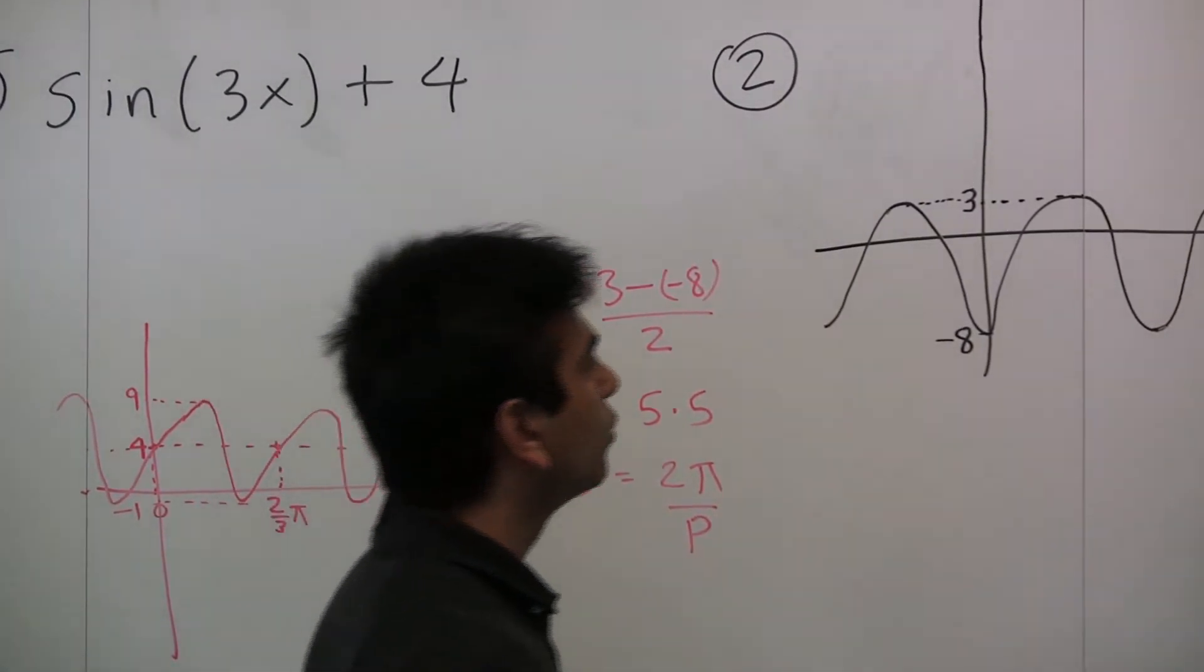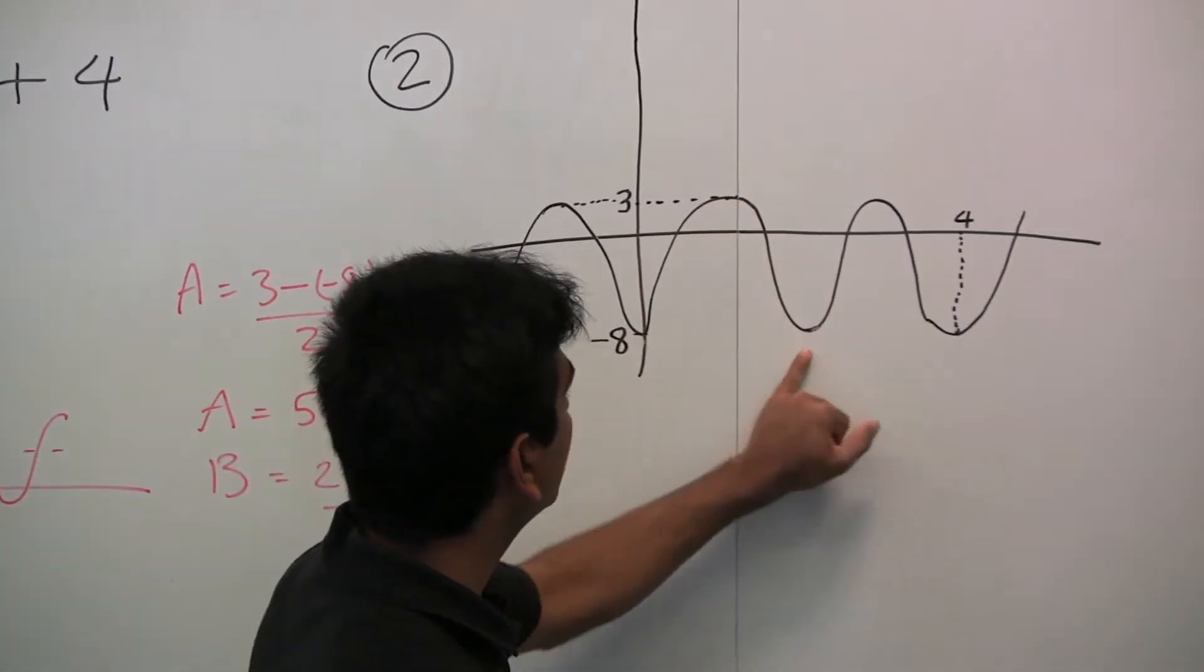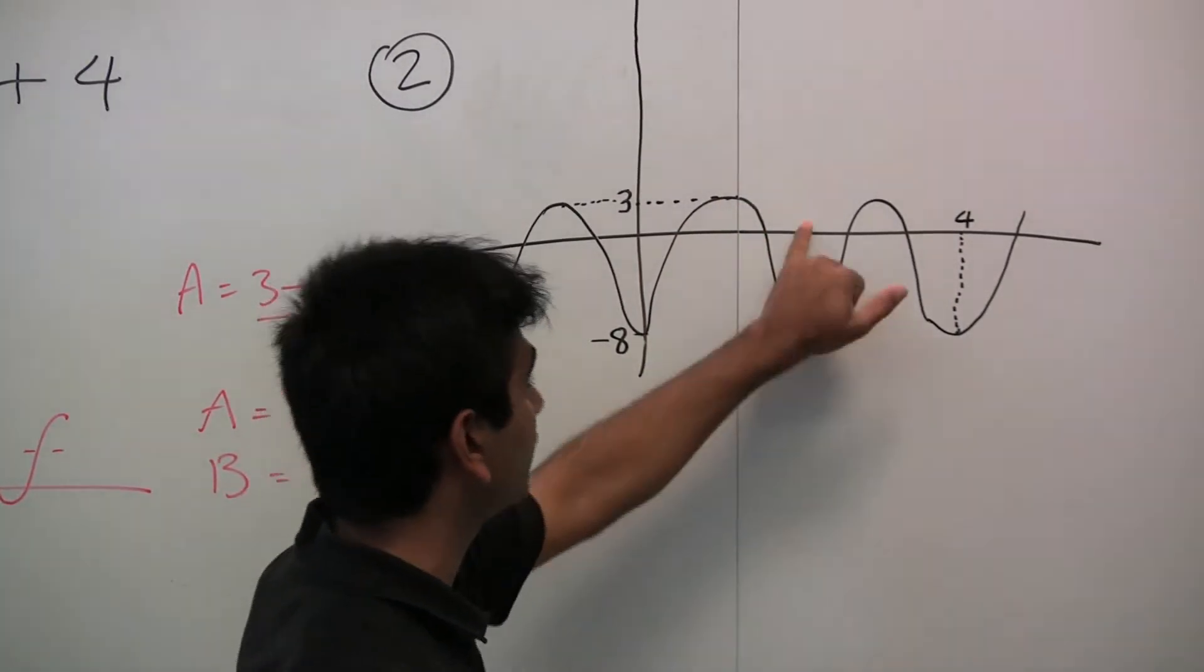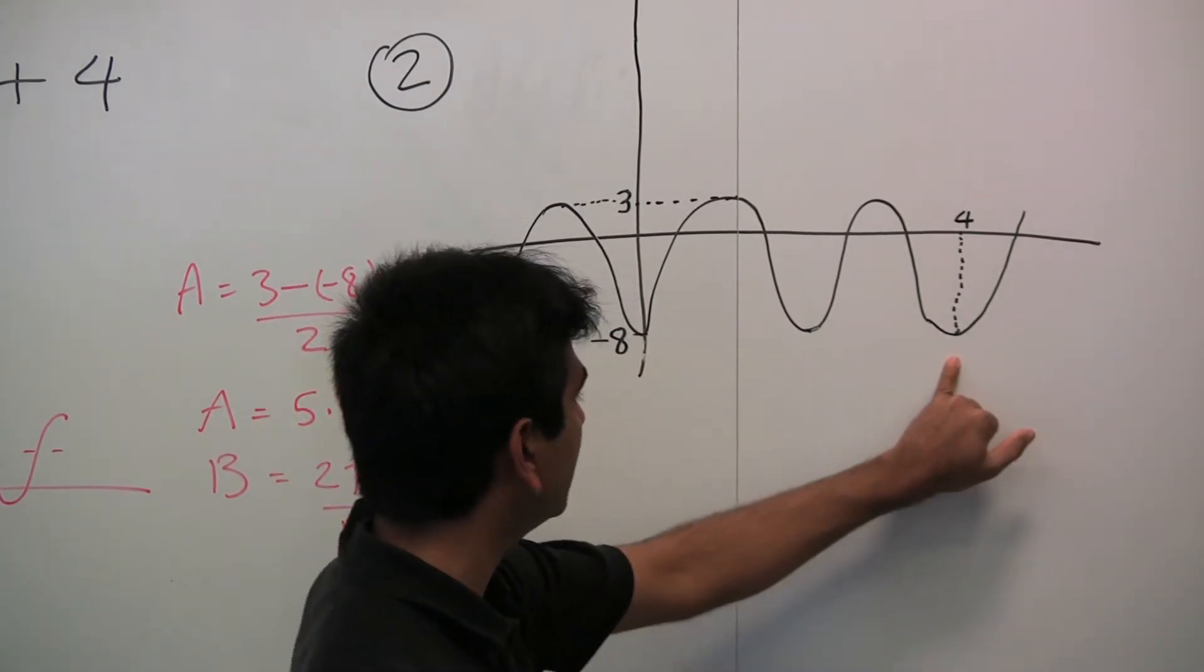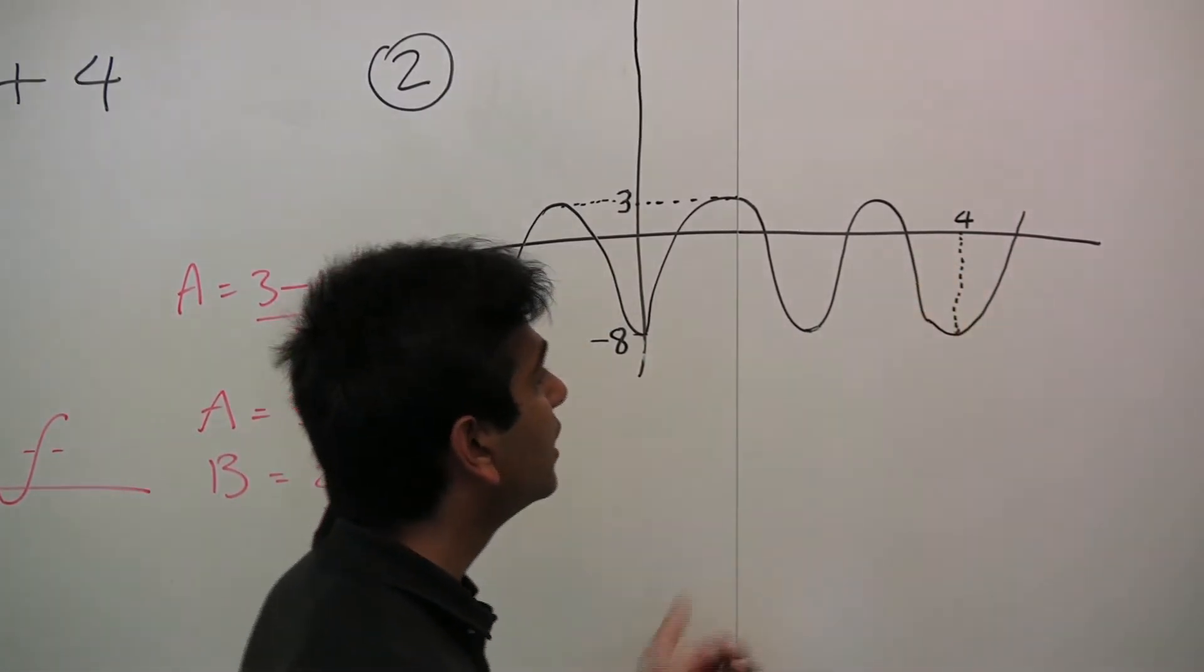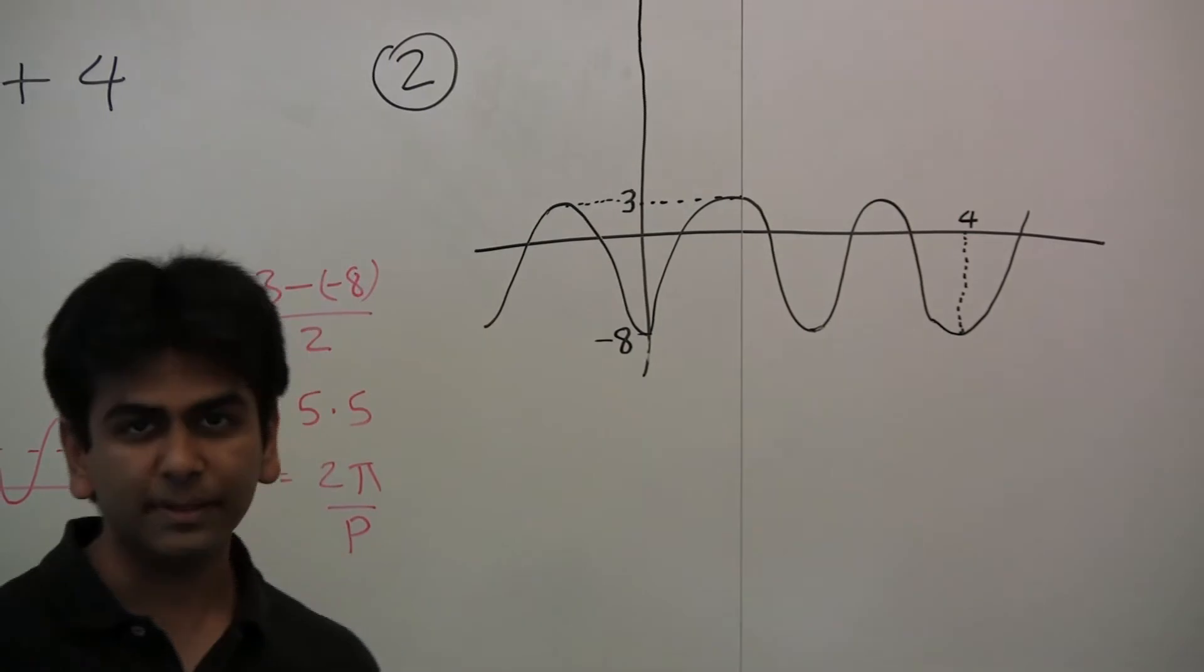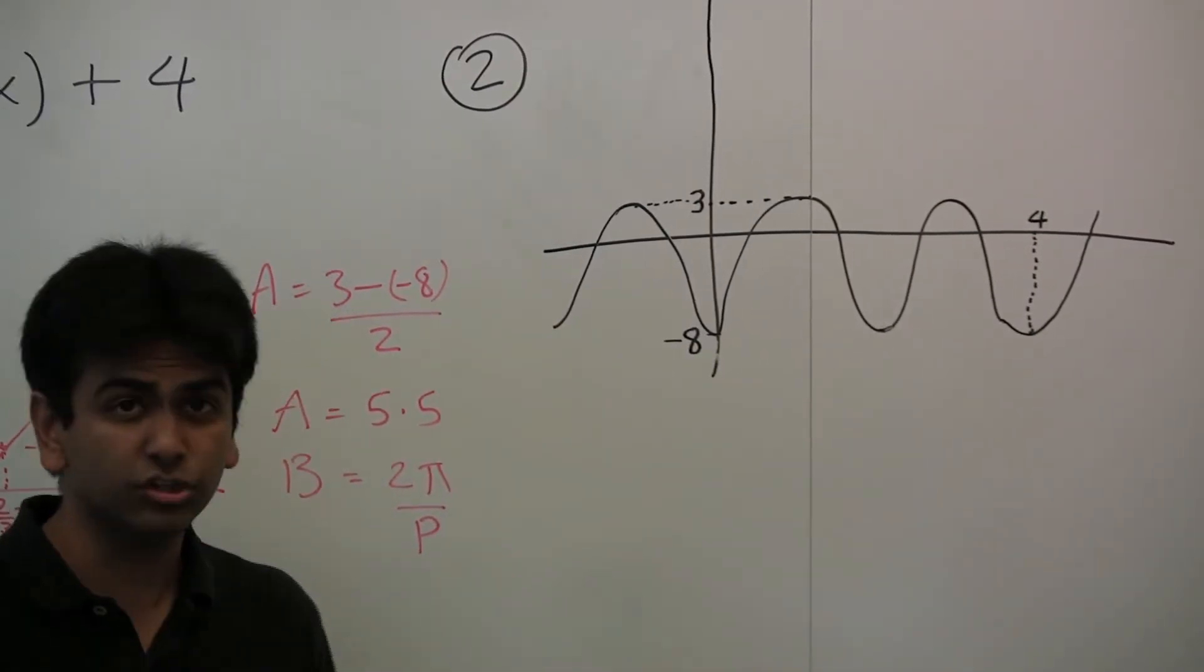What is the period? Well, we don't know how often it repeats itself here because we don't know the x value here, but we know that 2 periods is 4 x units. That obviously means that 1 period is 2 x units, so p is 2.